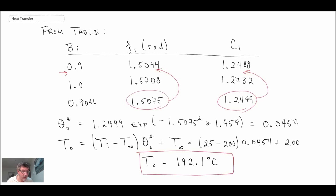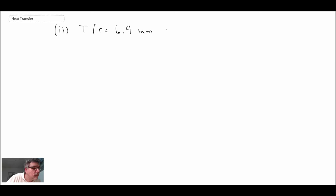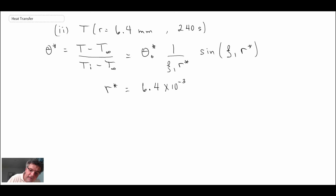What we now need to do is evaluate what is going on at radial location 6.4 millimeters. For that we have to use the spatial distribution solution. We'll notice in this equation we have r*. r* is the radial location we're interested in, 6.4 millimeters, divided by the radius of our sphere. So r* is 0.512. With that we can plug in the values because we have θ₀* from the first part and we know ζ₁ from the table.